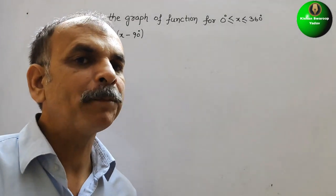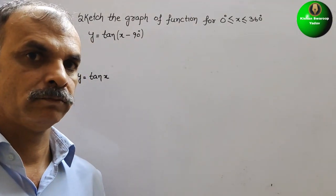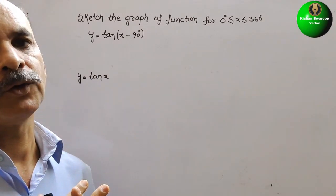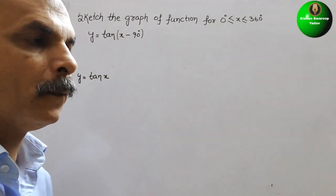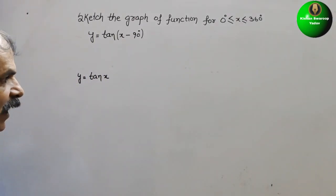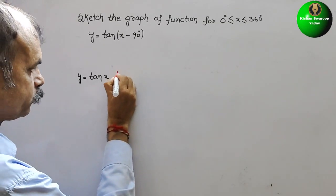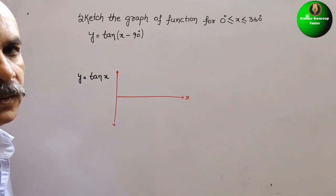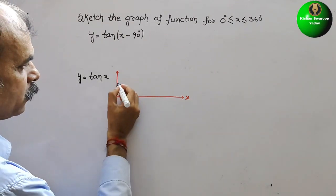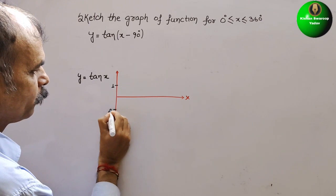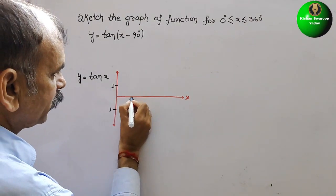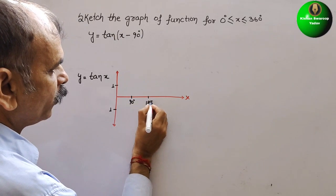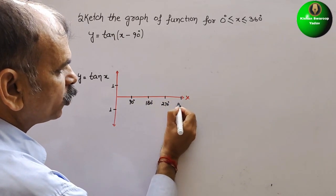We know that one complete cycle of tan is 180°. So the graph will be just like this for tan(x). This is your y-axis and this is your x-axis. Here comes your 1 and here comes minus 1. Here comes your 90°, 180°, then 270°, and here comes your 360°.